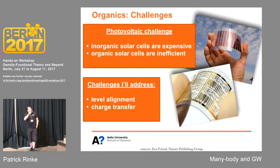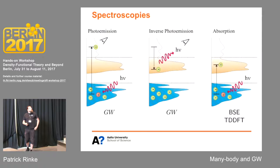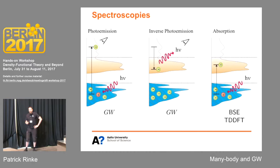We have the same questions for organic electronics. The inorganic solar cells are still quite expensive, and we'd very much like to use organic materials, but they're very inefficient — we're trapped in this conundrum. A lot of this has to do with level alignment and bringing charge in and out of these systems. This is one of the questions you can address with GW, as I will show you later. So let's come to the fundamentals of spectroscopy.